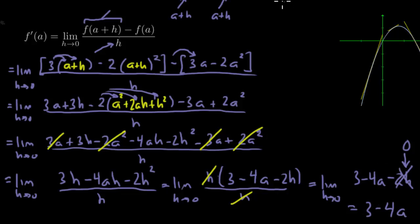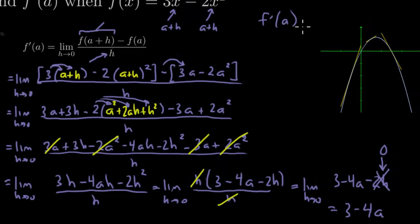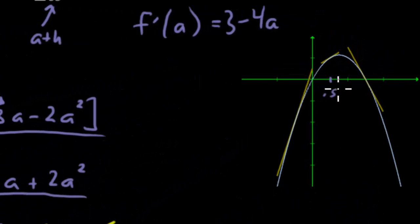So that means my derivative, my f prime of a, is 3 minus 4a. So if I wanted to know the slope at, say, 0.5 right there, all I'm going to do is plug 0.5 in for a.